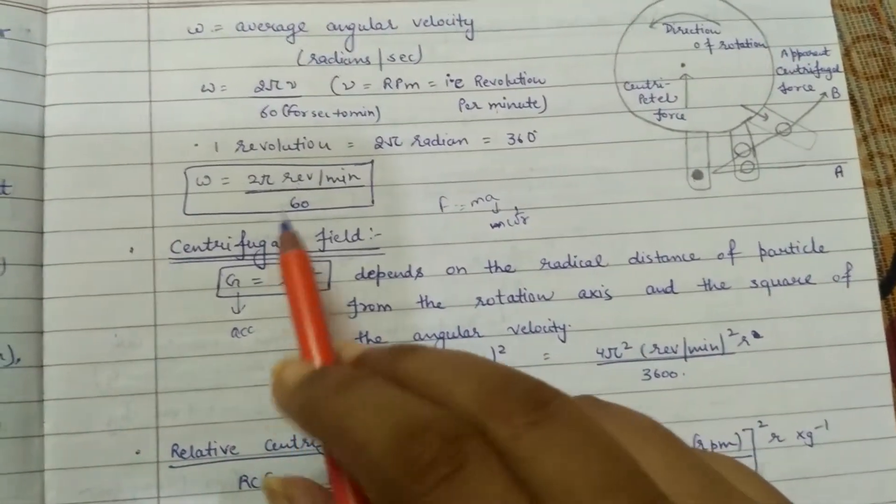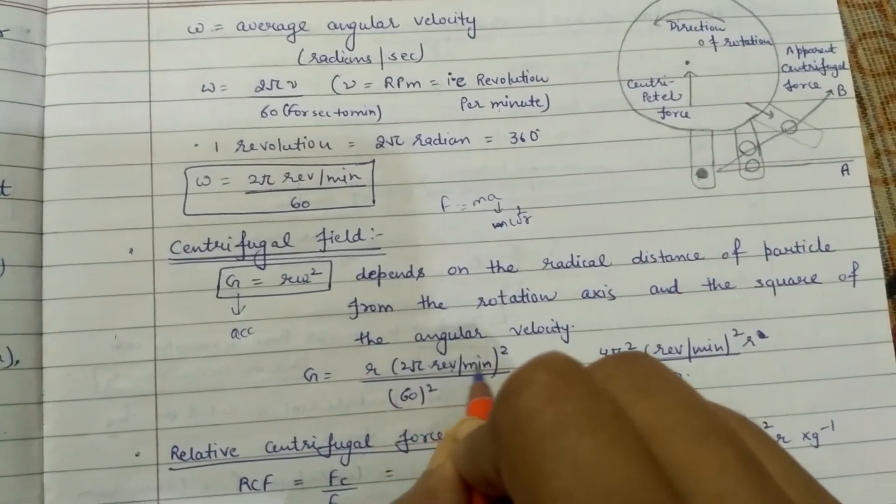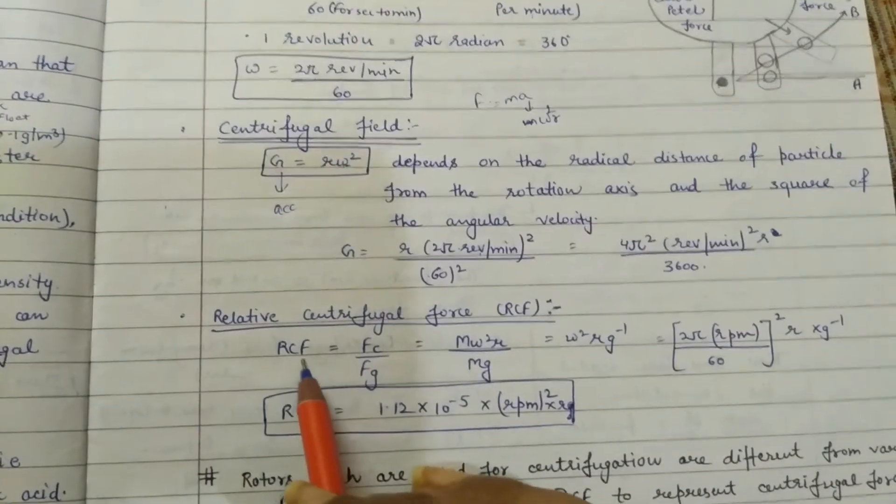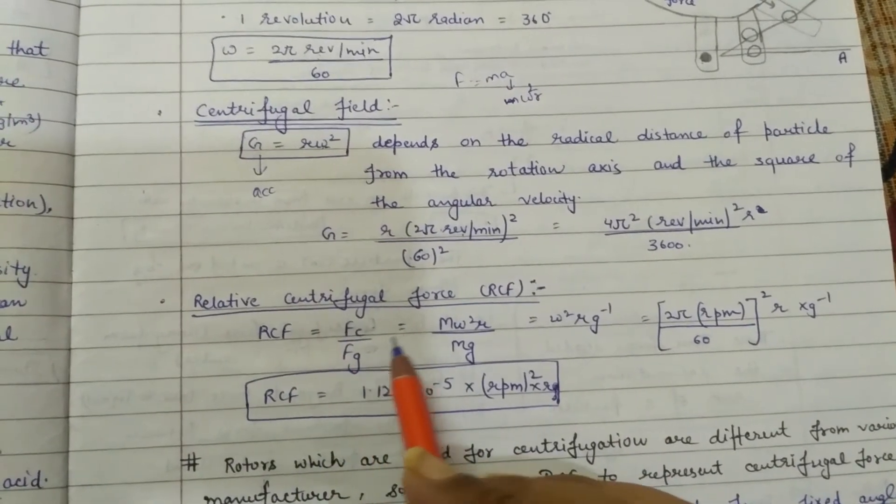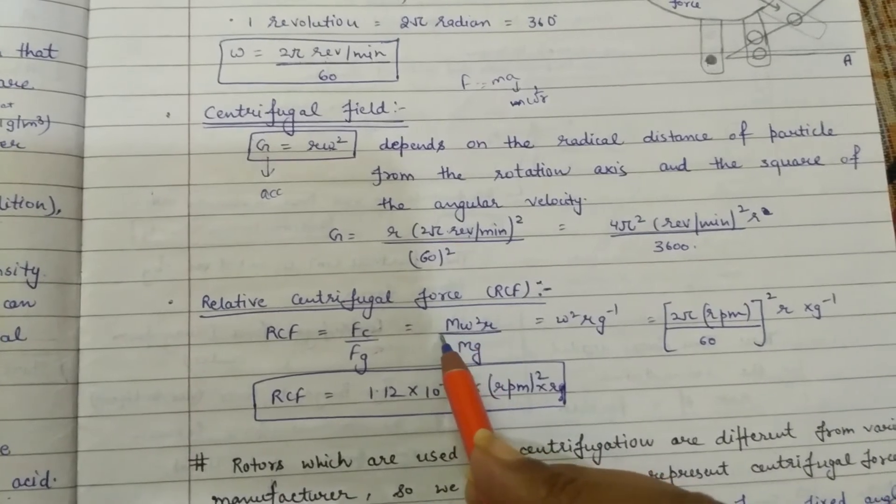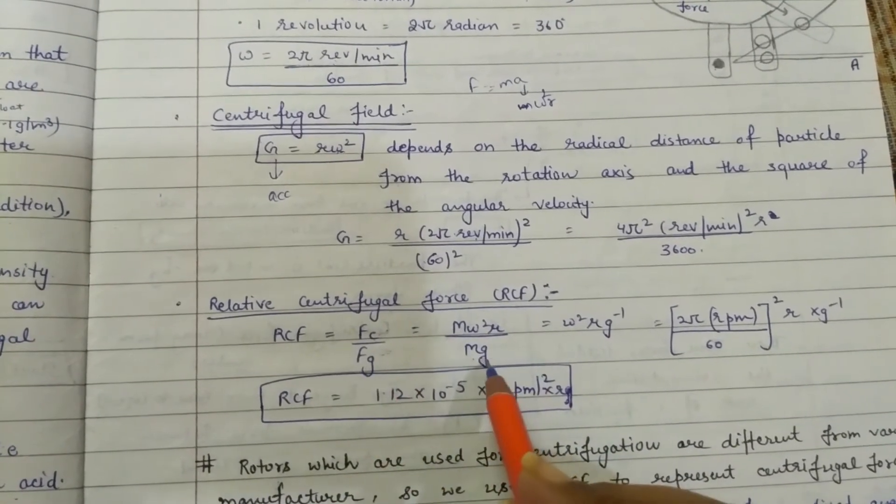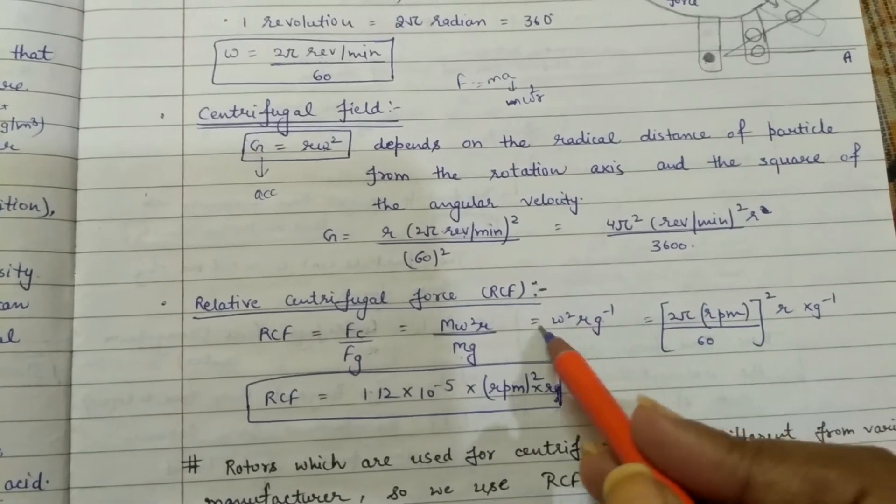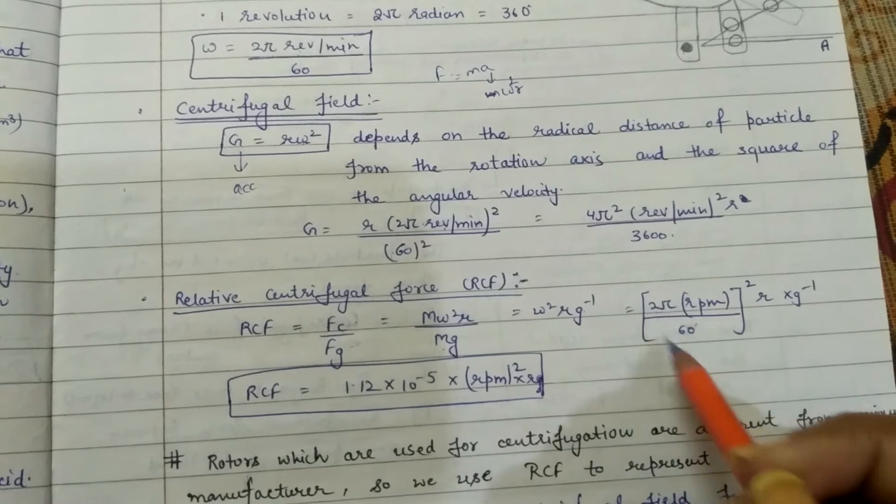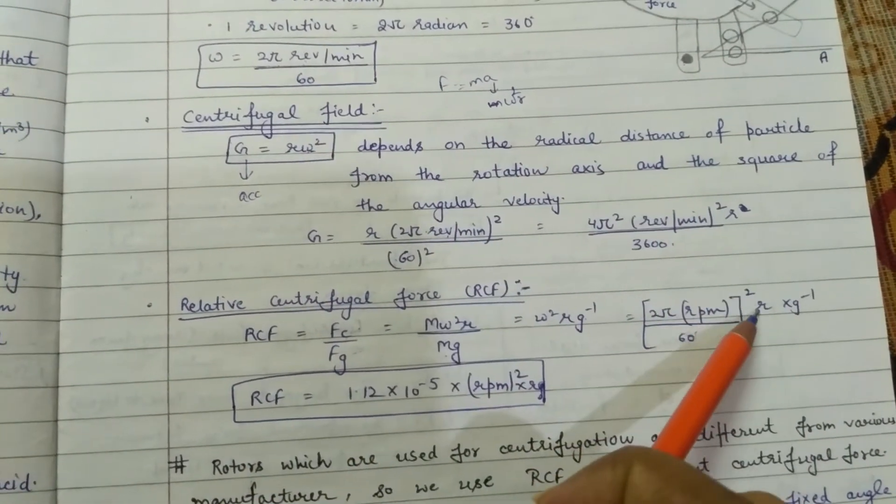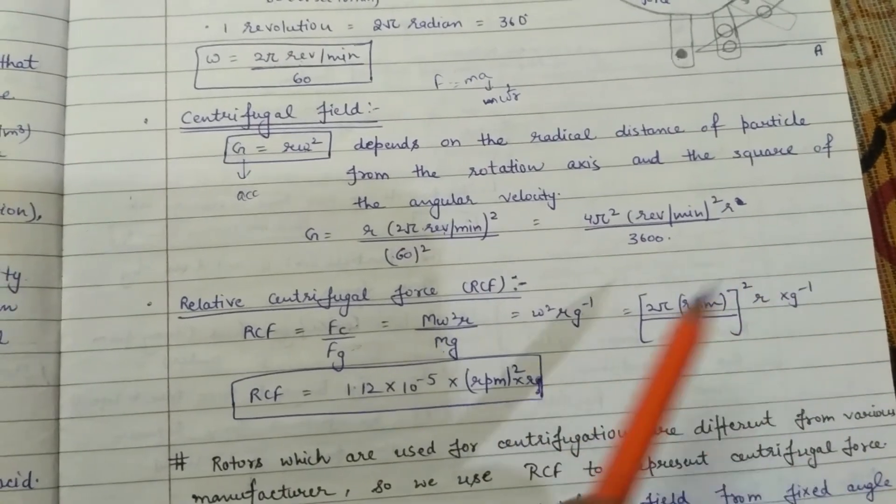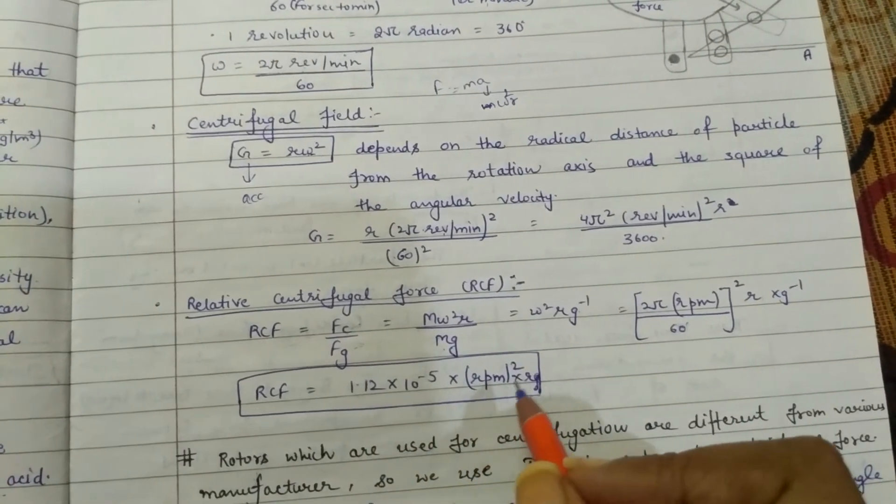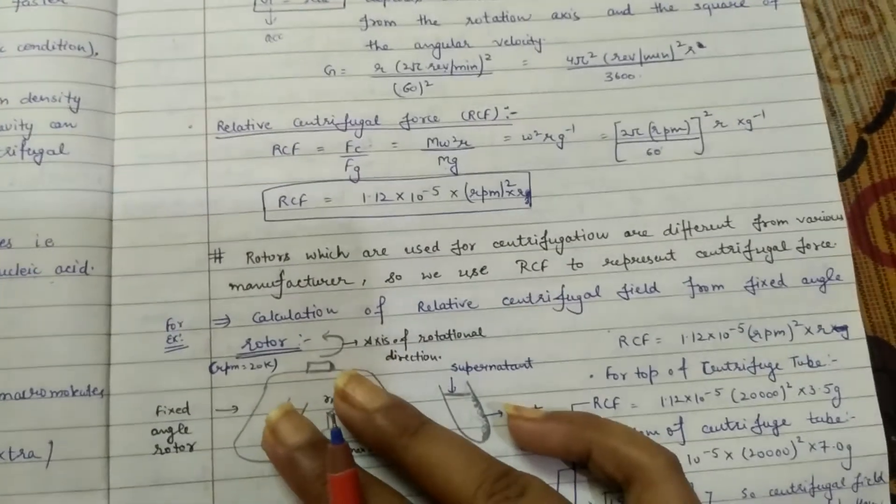Now, let's derive the equation for RCF, which is relative centrifugal force. We compare centrifugal force and gravitational force. RCF equals omega square r over g. When you substitute omega equals 2 pi rpm over 60 and simplify, you get RCF equals 1.12 times 10 raised to power minus 5 times rpm square times r.